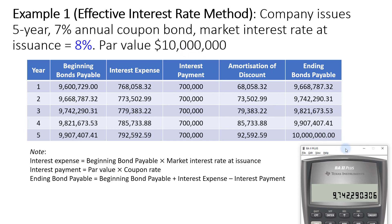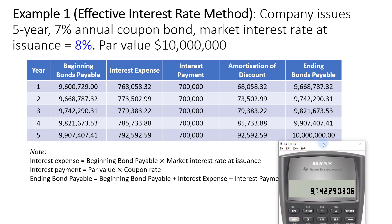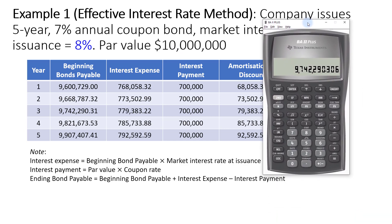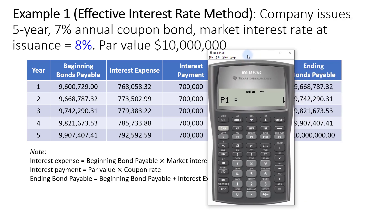If you continue this process until year 5, you will see that the ending bonds payable will be $10,000,000 — the par value of the bond. Doing this repeatedly can be tedious, so there is a built-in function in the calculator to compute this. Assuming you have entered all the numbers into the TVM buttons, you can access the amortization schedule by pressing 2nd PV. For year 1, set P1 (starting period) to 1 and P2 (ending period) to 1.